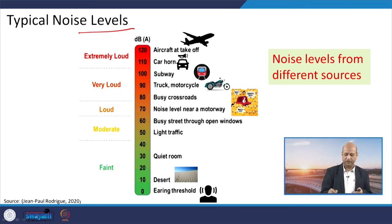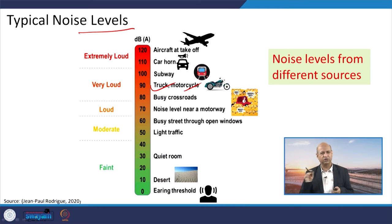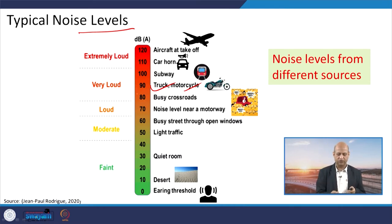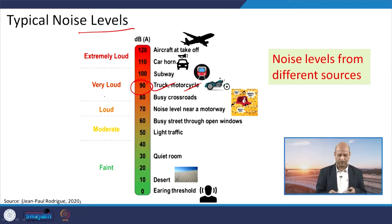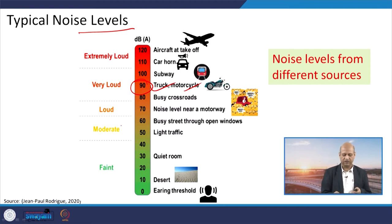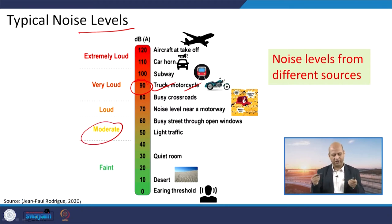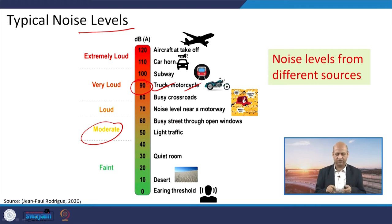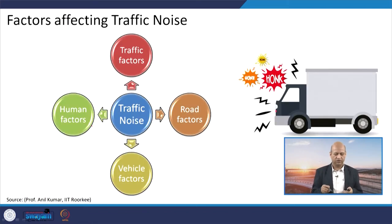Here are some levels you can relate with different activities. For example, a truck or motorcycle passing makes a sound level known as very loud — around 90 decibels. That is the unit of noise measurement. Light traffic causes only moderate noise, and a quiet room is very calm. Different activities are linked with different levels of sound or noise.